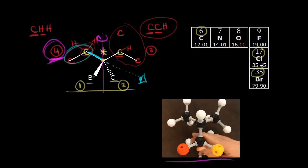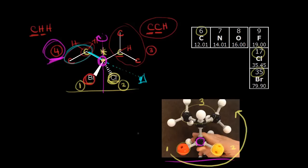Looking at what we see when we stare down the carbon–carbon bond: the chiral center is the front carbon, bromine (red) is to the left as the highest priority, chlorine (yellow) is to the right as second priority, and the isopropyl group is up as third priority — with our lowest priority ethyl group pointing away from us. Going from one to two to three around the circle, we move counterclockwise. Counterclockwise is S, so the configuration of this chiral center is S.